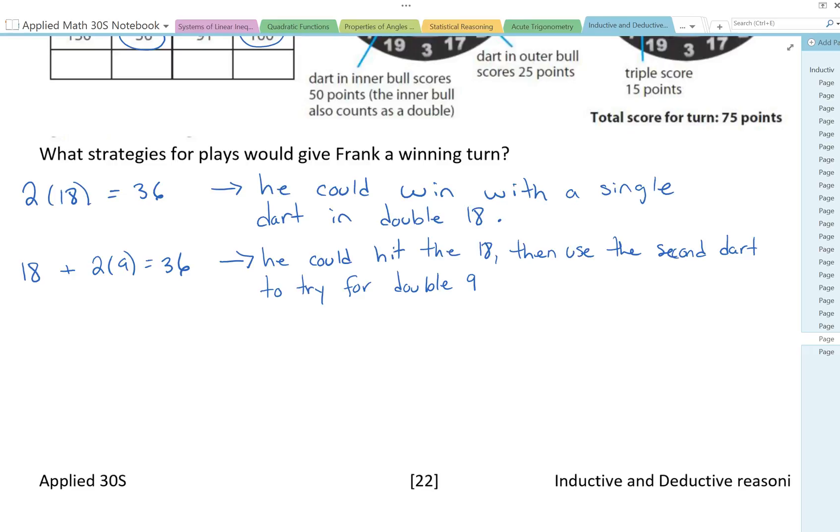Now if I continue with my frame of thinking, so he missed the double 18 just got 18, what if he misses the double 9 and just gets 9? Well then he would have to get 9 again. He would have to win his turn with a third dart.